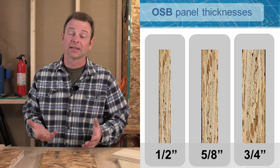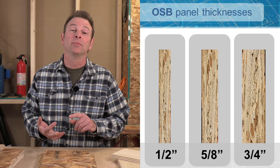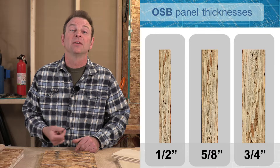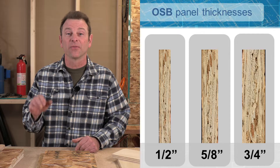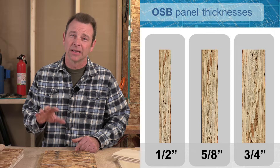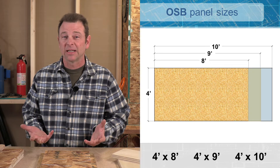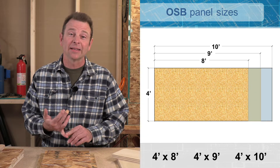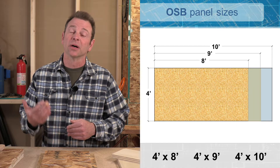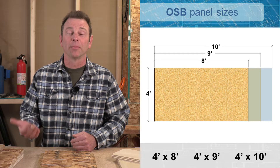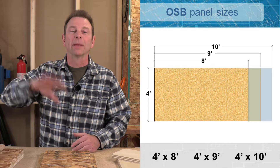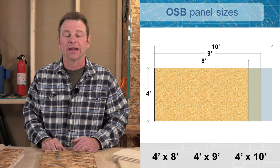OSB comes in a lot of thicknesses. Some common ones you'll see in construction: half inch would be typical wall sheathing; five-eighths would be typical for a roof deck; three-quarters is very standard for floor surfaces like subfloors; and seven-sixteenths is also a common wall sheathing thickness. Panel sizes for OSB are standard as well — four by eight is the favorite we always use. OSB can also come in four by nine or four by ten, which has become more common for sheathing past a first floor or making better connections for shear walls on the outside of a house.